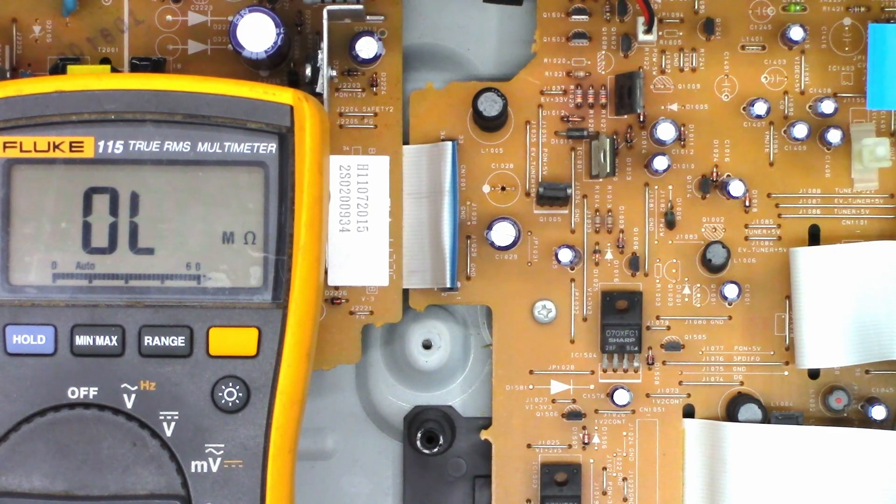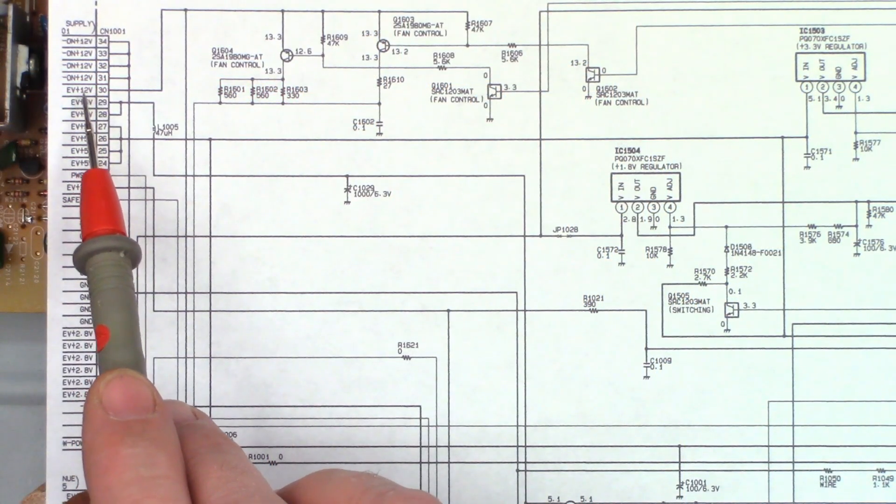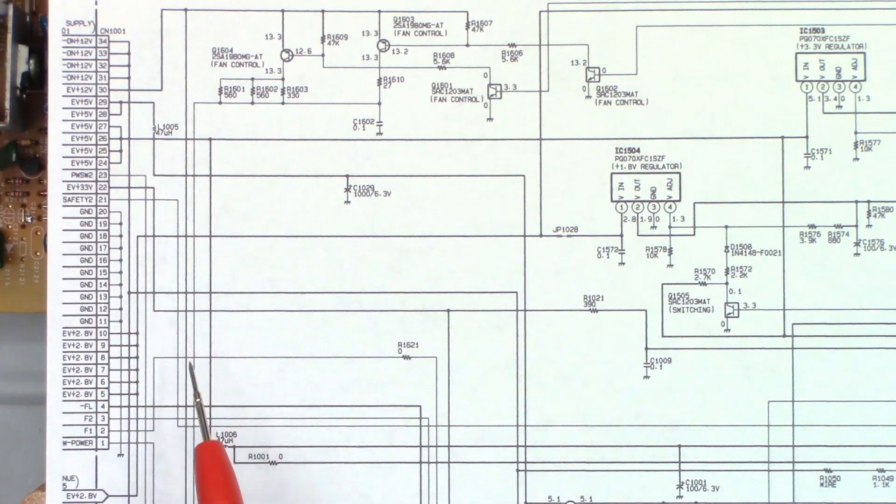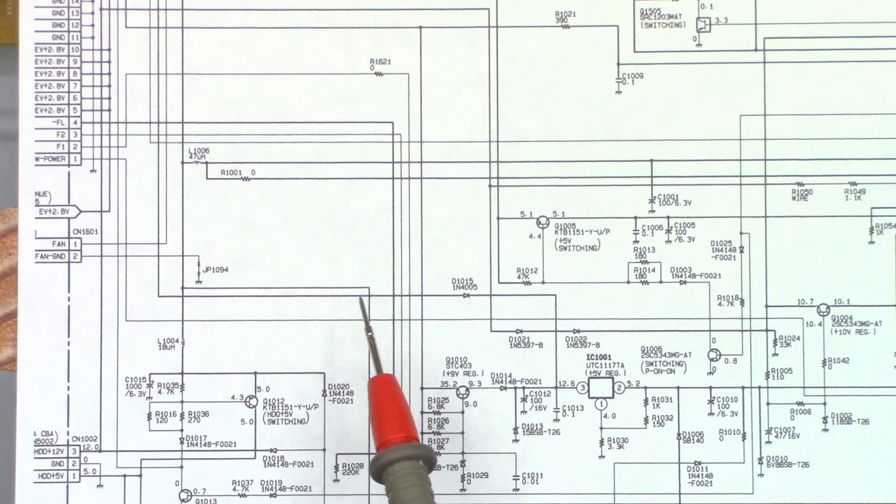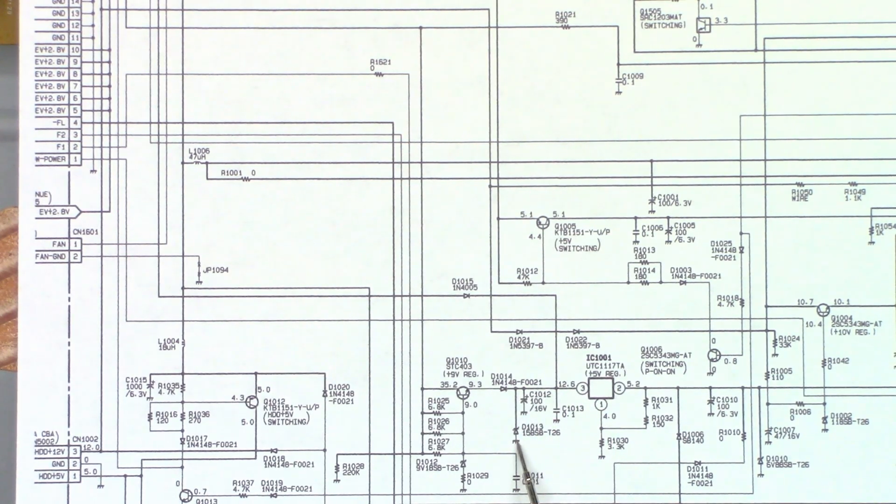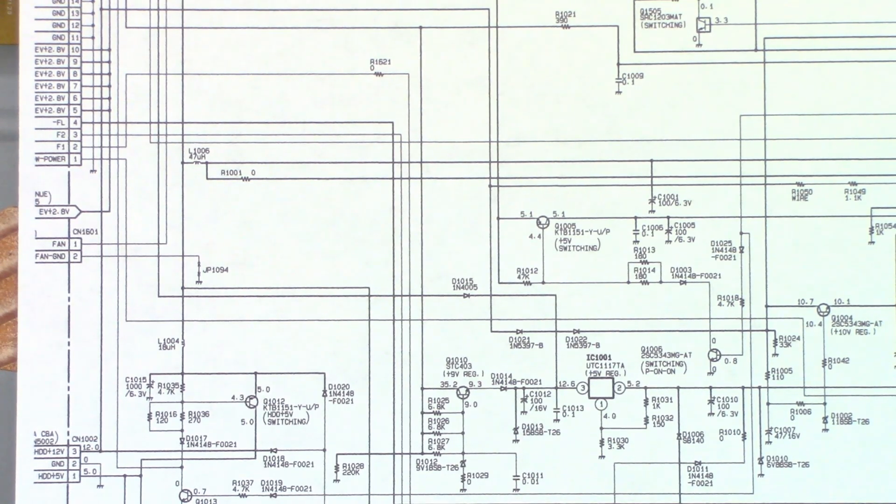Let me show you where that is in the schematic. So the EV12 volts, which is the Everon 12, comes through here, comes down through here to this point, goes across that 1N4005 into this voltage regulator. And look at this, D1013 right there goes right to ground. So I'm going to have to pull the main board out of this unit and unsolder that diode and see if it's actually bad or not. It is a 15-volt Zener diode, so I don't know if I have one or not.